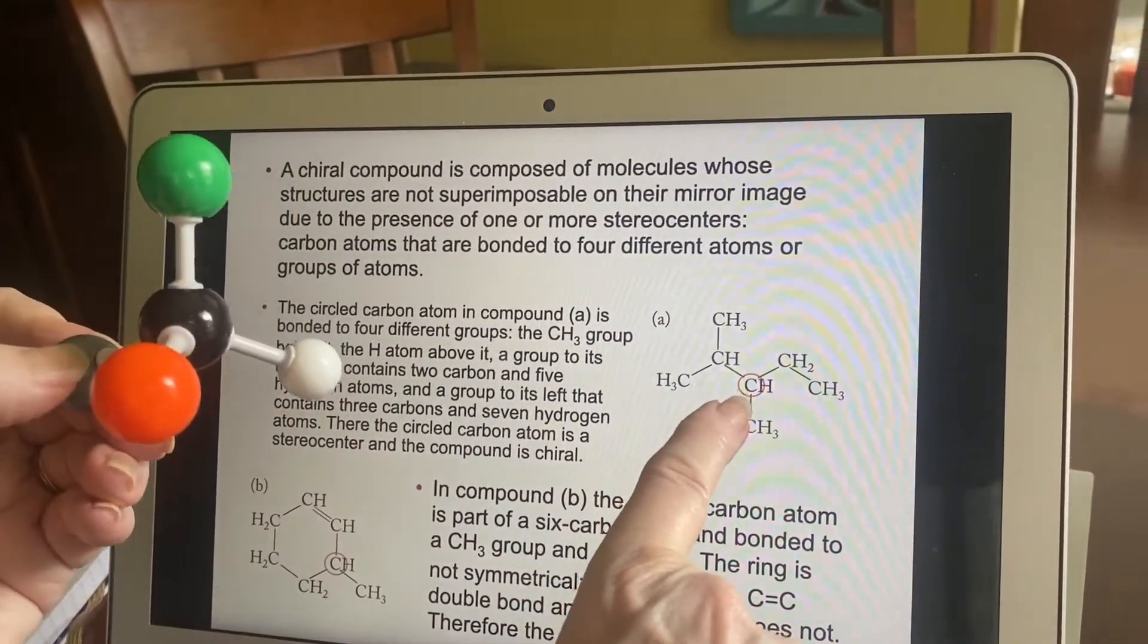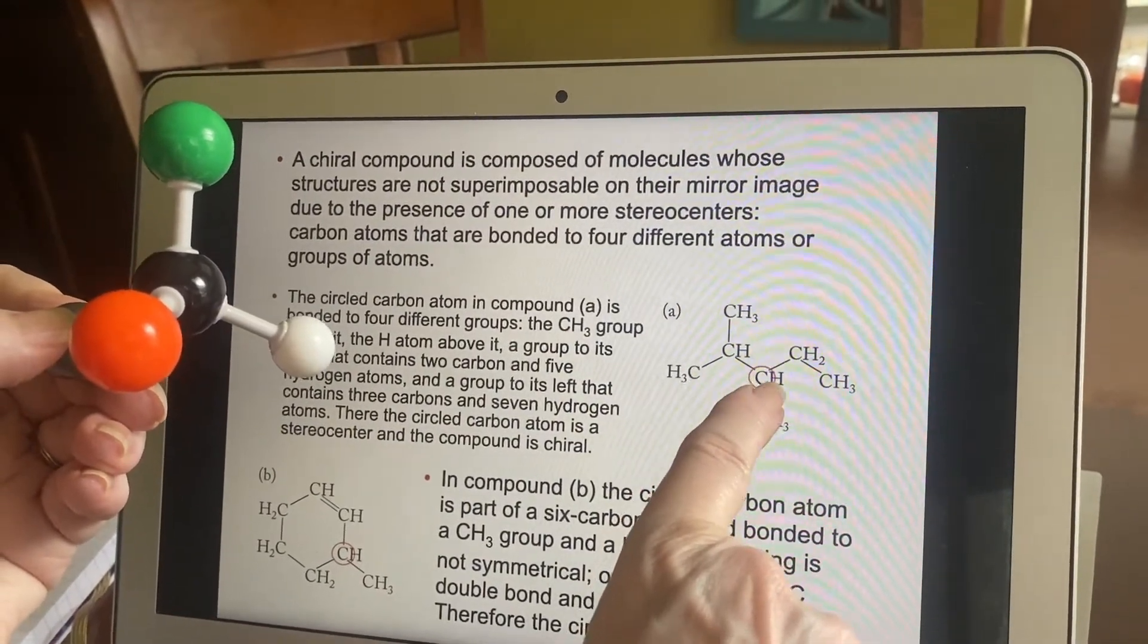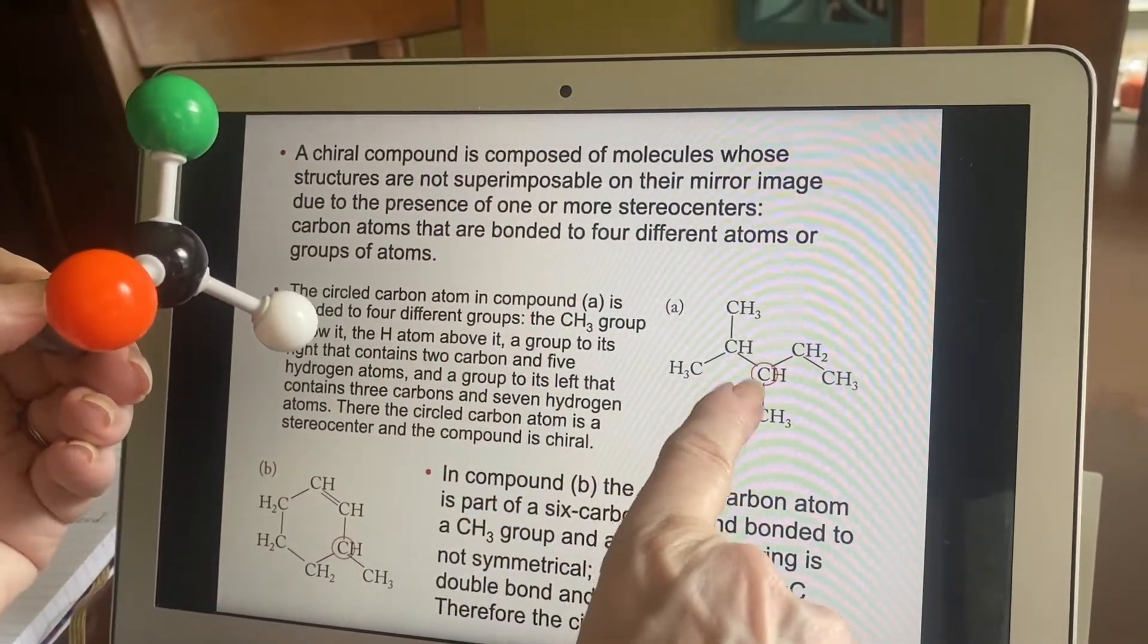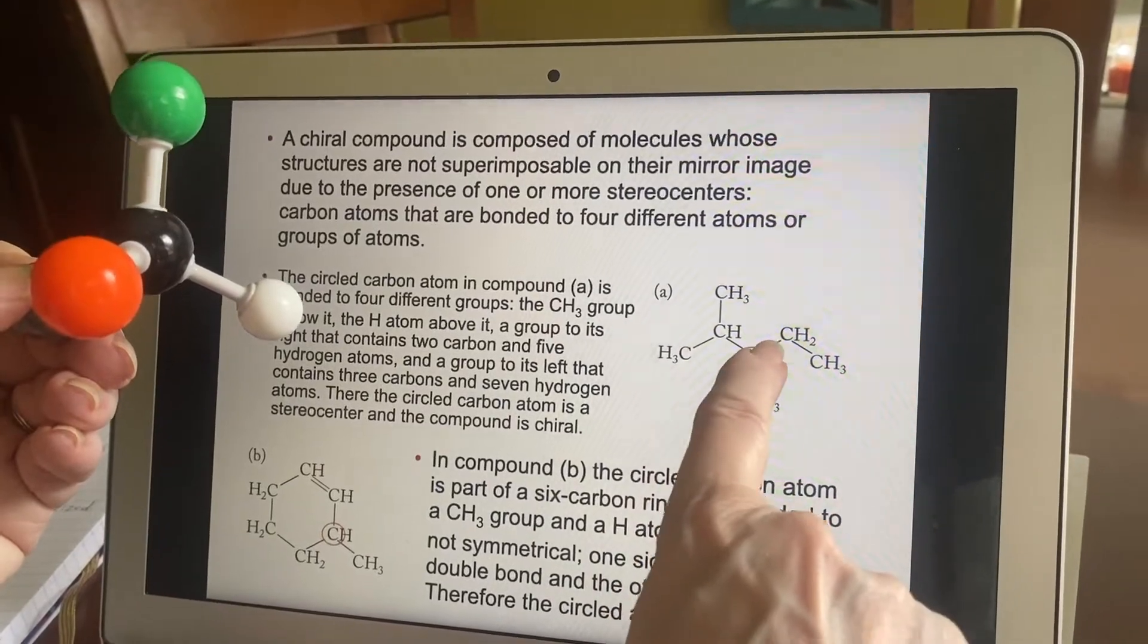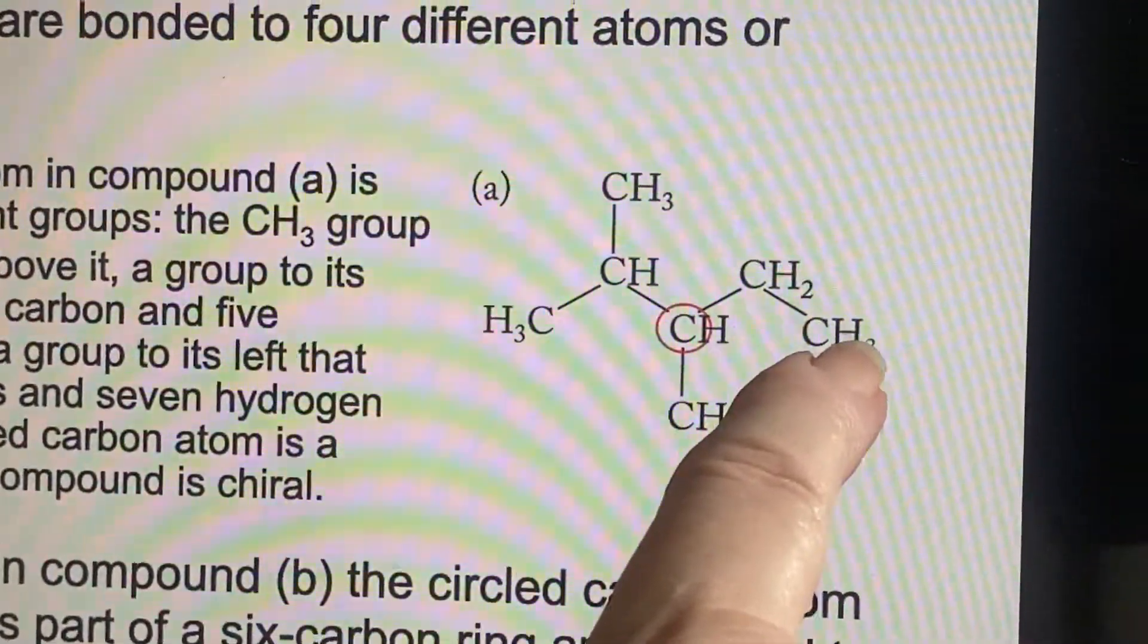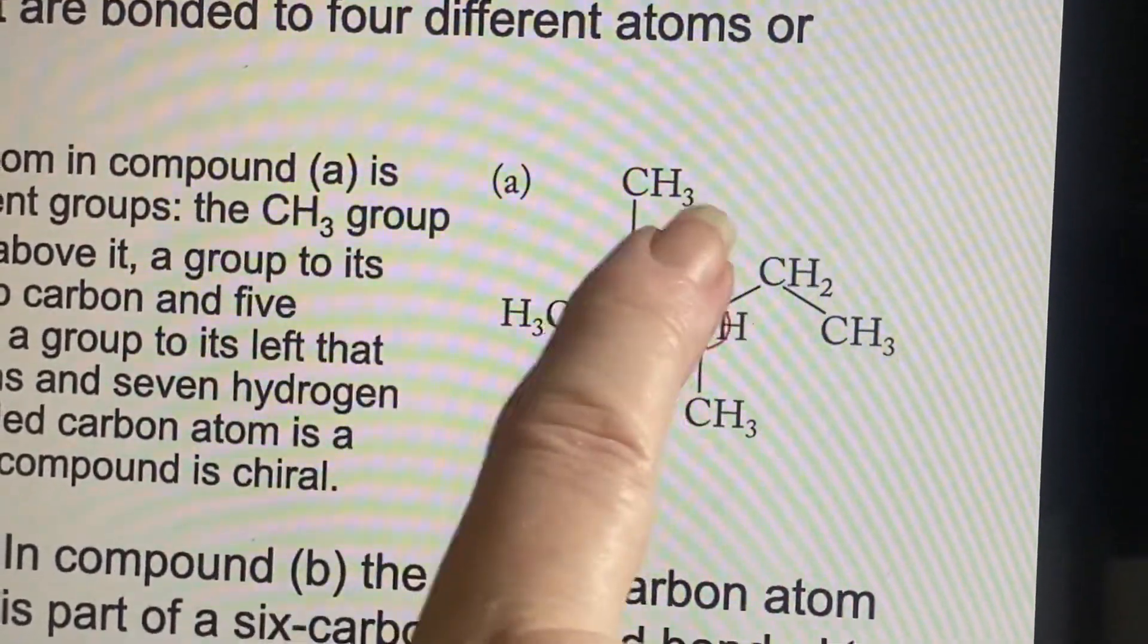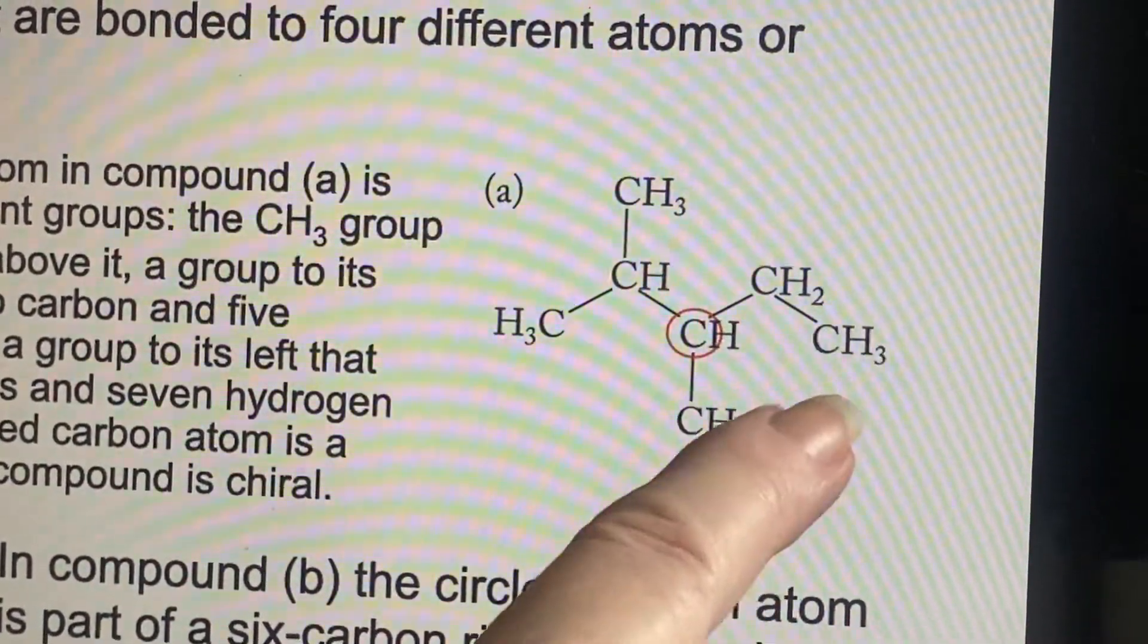So this particular one in this picture is bonded to four different things. The first one is this hydrogen, just a hydrogen. The second one is this methyl group. The third one is this ethyl group. And then it goes out to this propyl group. You're not responsible for knowing the names of those groups. But you can see that the four are different.